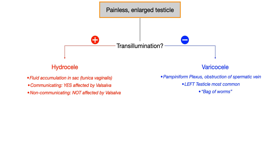If you see a varicocele, it should be left-sided. It's a very high yield anatomy point, because if you're given right-sided testicular pathology, you want to start looking for red flags that could actually be a testicular tumor. Also look for the buzzword "bag of worms" if they're describing a physical exam — they're hinting heavily that you're dealing with a varicocele.